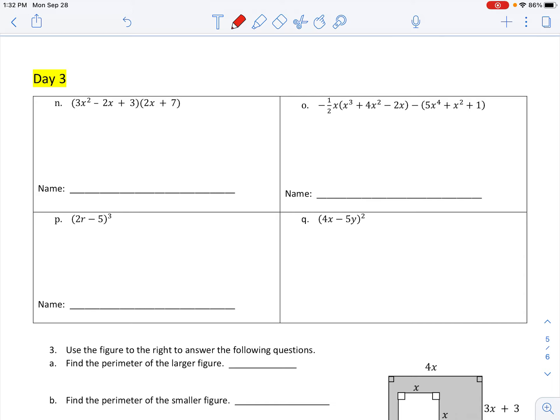And this is why on letter N I do not like to use the word FOIL. FOIL only works on binomials times a binomial. And what we have on letter N is a trinomial times a binomial. So if I try to do FOIL, first terms, okay. Outer terms, okay.